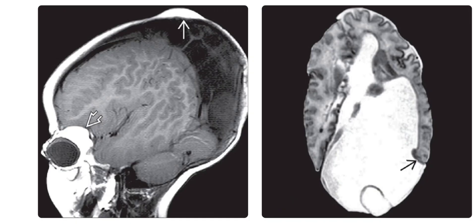On the left is the sagittal T1-weighted MRI showing an ipsilateral scalp and orbital lipoma. The globe is buphthalmic with a scleral lipodermoid. On the right is the axial T2-weighted MRI showing marked left ventriculomegaly with herniation of the ventricle through the choroidal fissure and hemispheric volume loss.